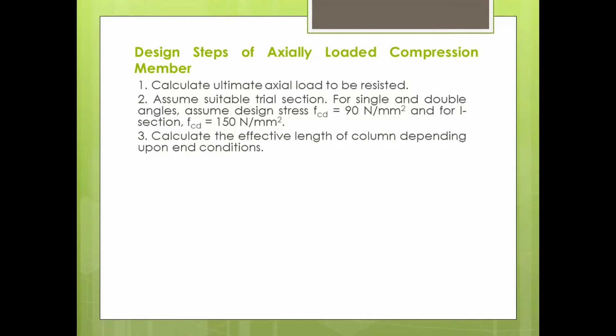Then calculate the effective length of the column depending upon the end conditions. These conditions are usually given, or you should assume them. Then compute the slenderness ratio and check as per IS 800 2007.